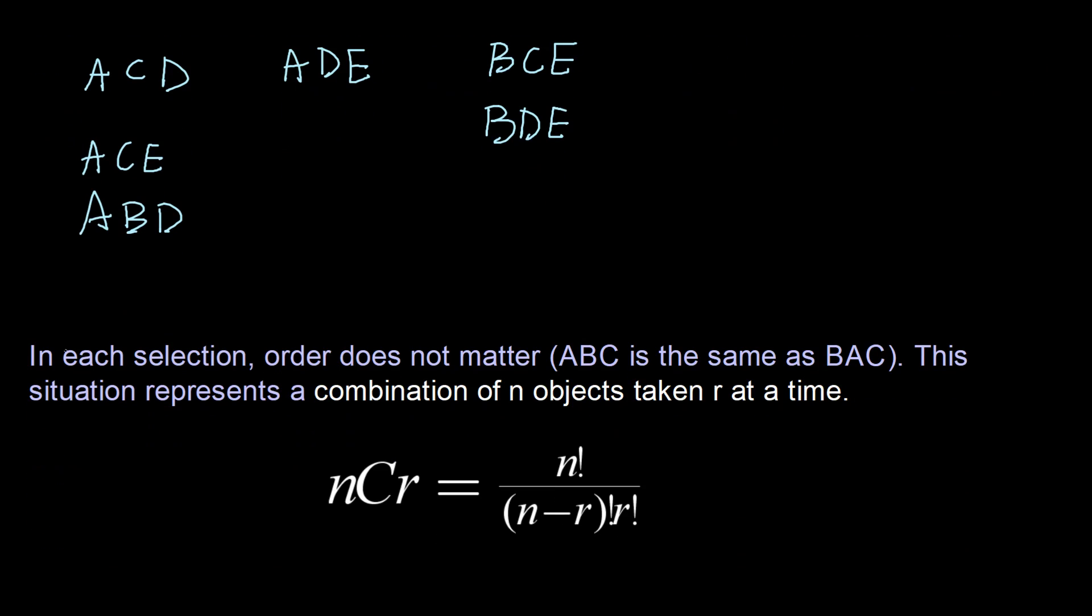So when in each selection order does not matter, this situation represents a combination of N objects taken R at a time. We denote this with NCR, which is read as N choose R. And we calculate that using N factorial divided by N minus R factorial times R factorial.